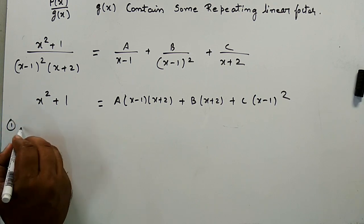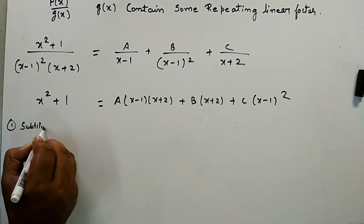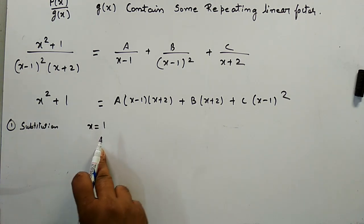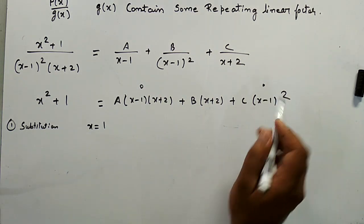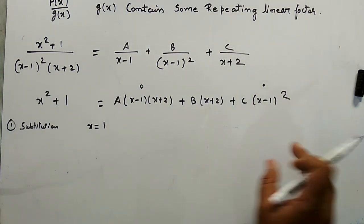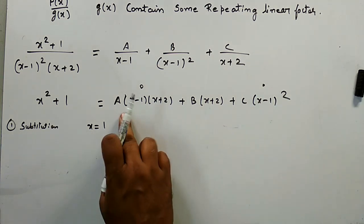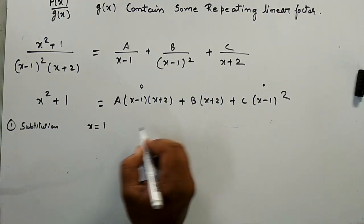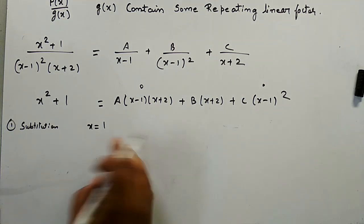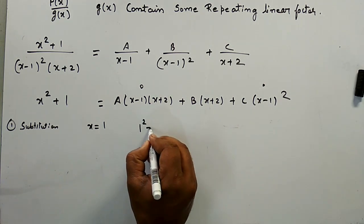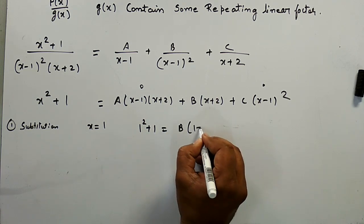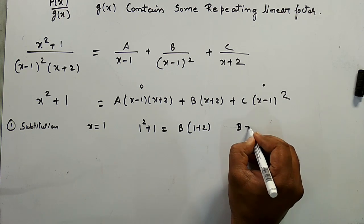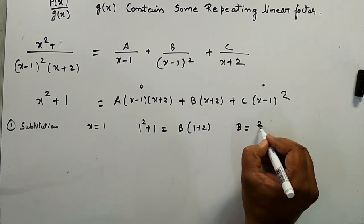First, using the substitution method, I am putting x = 1. When x = 1, the first and third terms are eliminated because (1 - 1) = 0. So directly we get B·(1 + 2) = 1² + 1 = 2, giving B = 2/3.